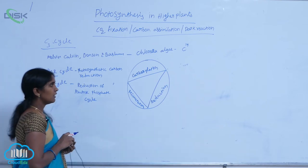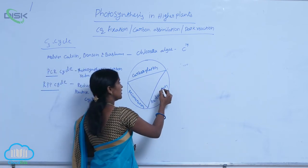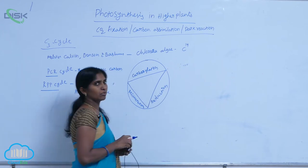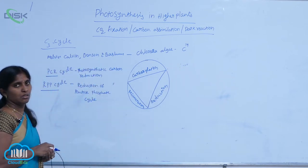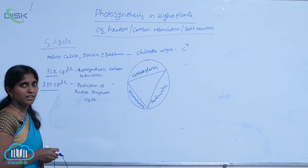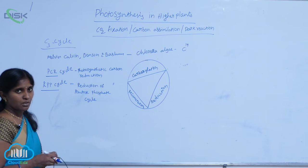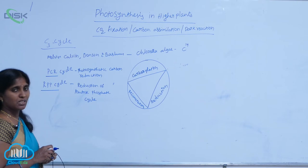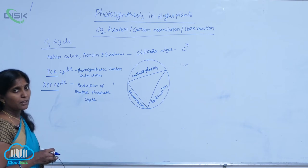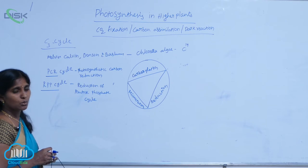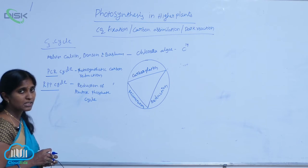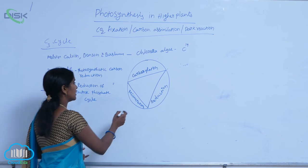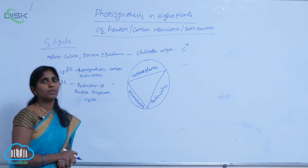In the reduction reaction, glucose is produced. If six molecules of glucose are produced, one-sixth remains as glucose, and the remaining five-sixths is used for the regeneration of RUBP.